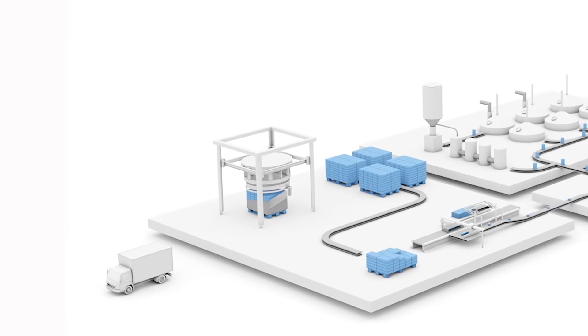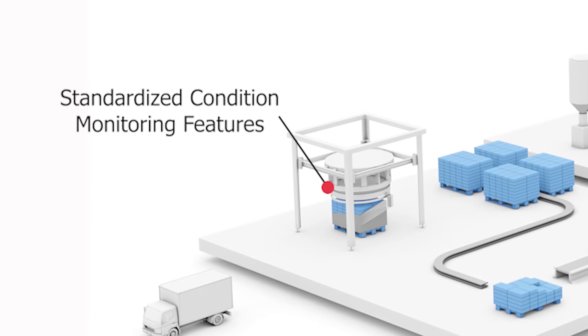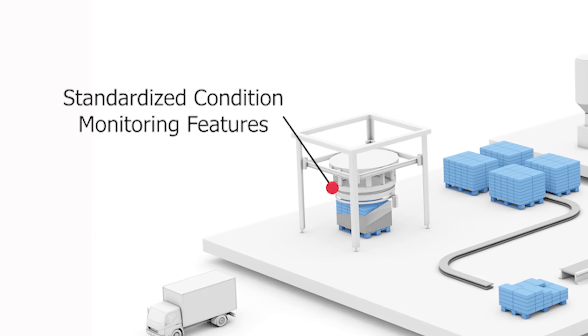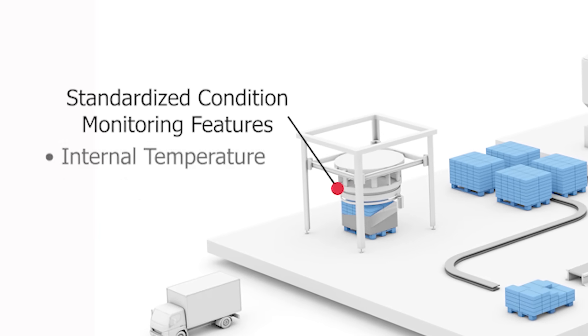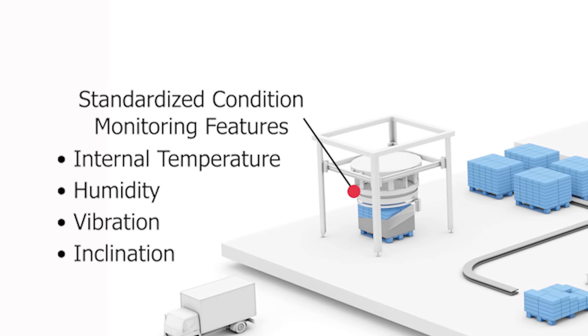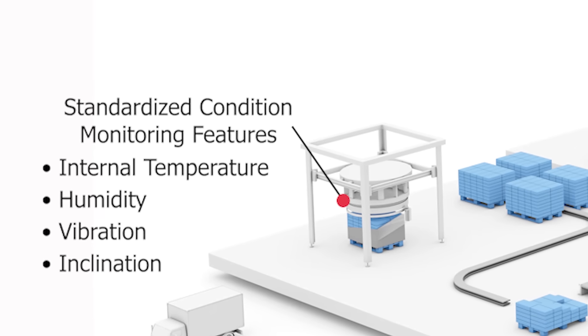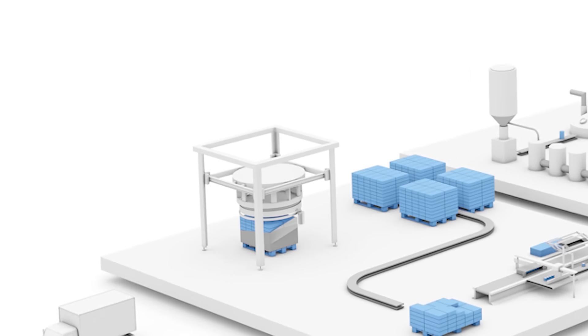Some of the key features of SAMS devices are standardized condition monitoring features. SAMS devices will monitor things like internal temperature, humidity, vibration, and inclination, both for the health of the sensor and the health of the machine. These features are common to all SAMS devices.